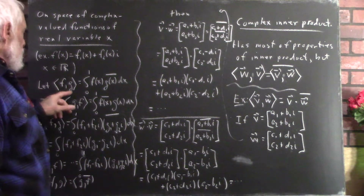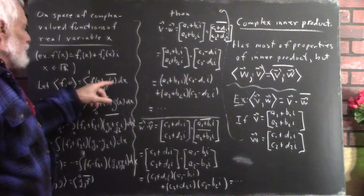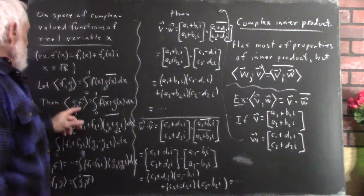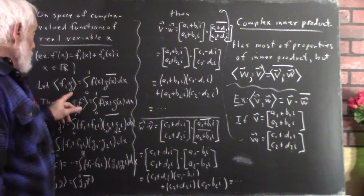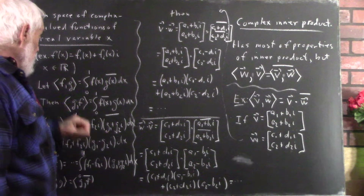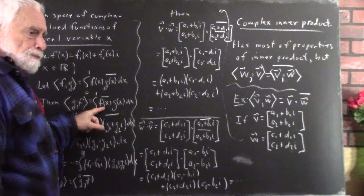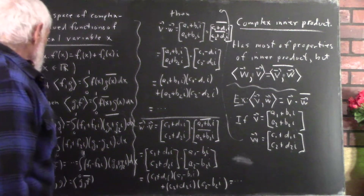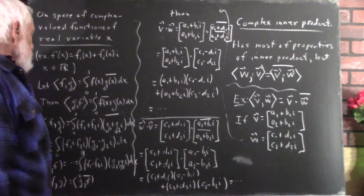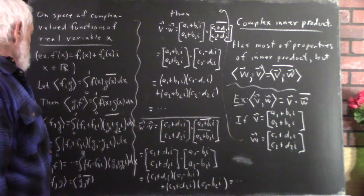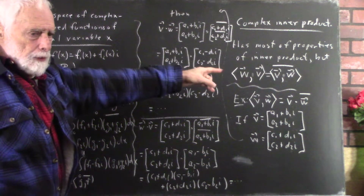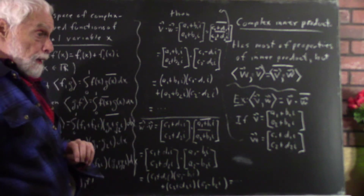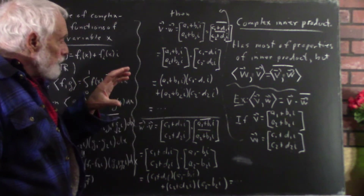We say the inner product of f and g is the integral from 0 to 1 of f(x) times the complex conjugate of g, with respect to x. For ⟨g,f⟩, the second function in the pair is f, so you take the conjugate of f times g, integrated with respect to x. We can verify the anti-symmetry required for a complex inner product. We need this property — without it, you wouldn't have a Euclidean space.